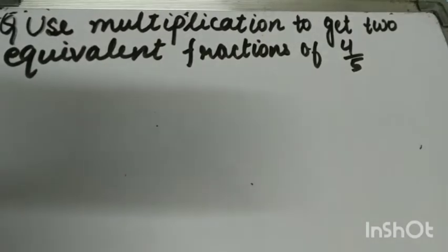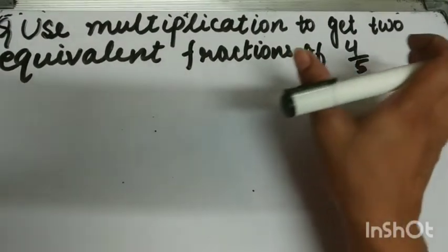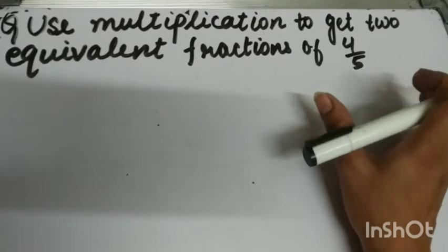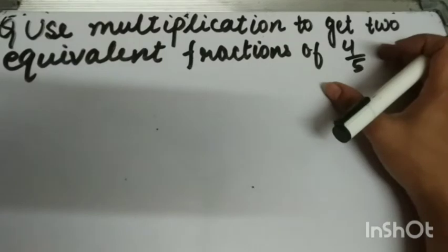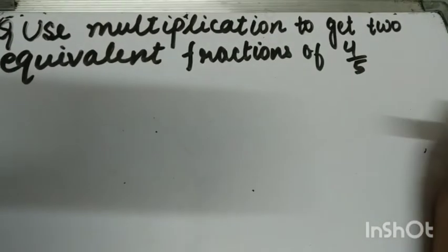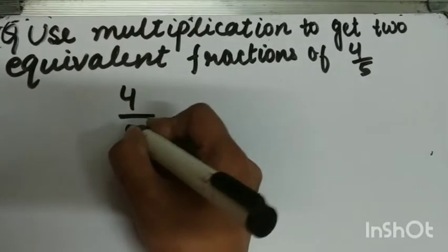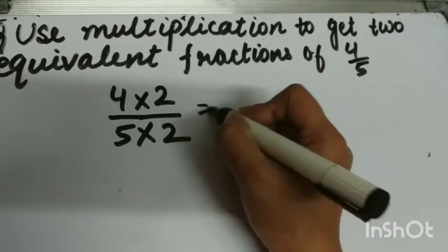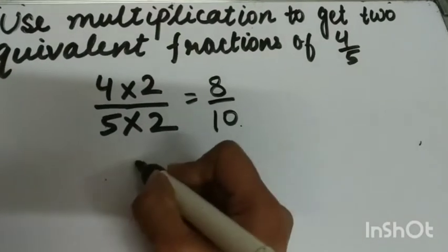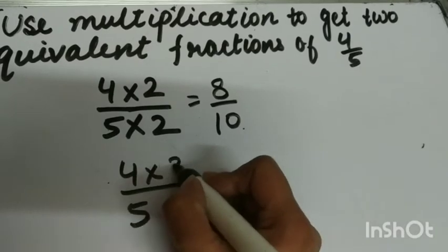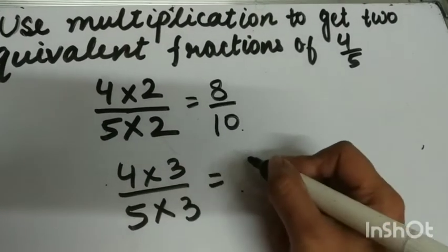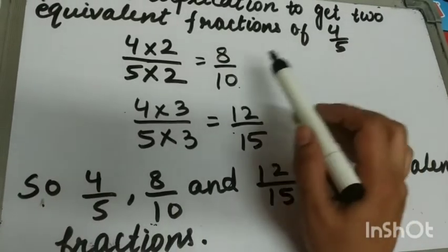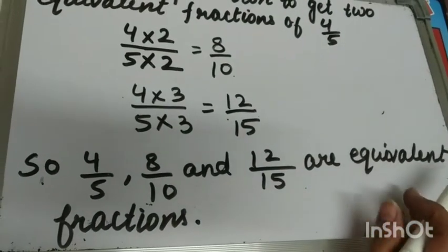I will explain with an example. The question is: use multiplication to get two equivalent fractions of four upon five. We will multiply the numerator and the denominator of this fraction by the same non-zero number. First, I am taking two — so I multiply both numerator and denominator by two, giving eight upon ten. Then taking three — multiplying by three gives twelve upon fifteen.